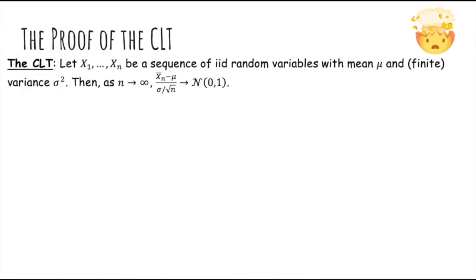So let's use this to prove the central limit theorem. The central limit theorem says that if X1 through Xn are a sequence of IID random variables with mean μ and variance σ², then as n grows to infinity, this standardized sample mean approaches a standard normal distribution.